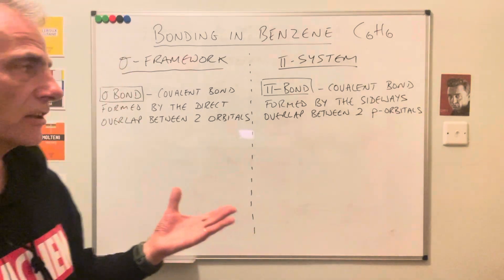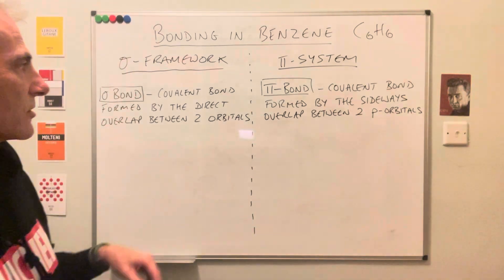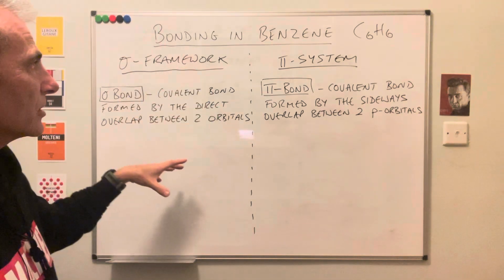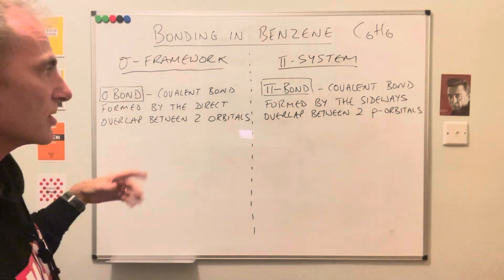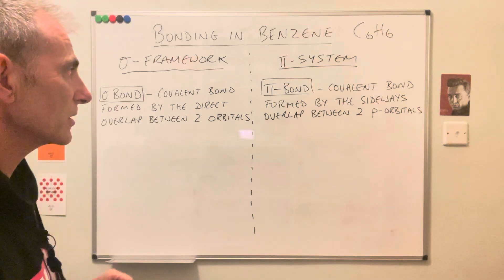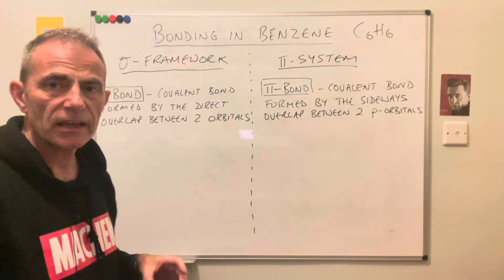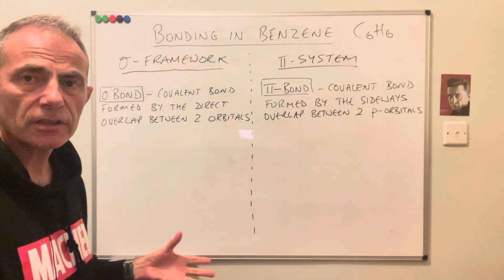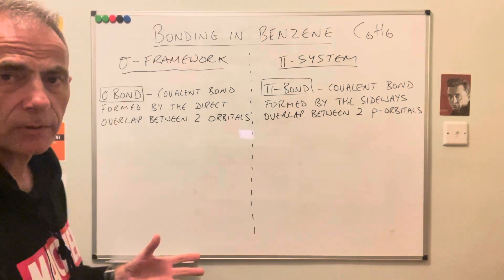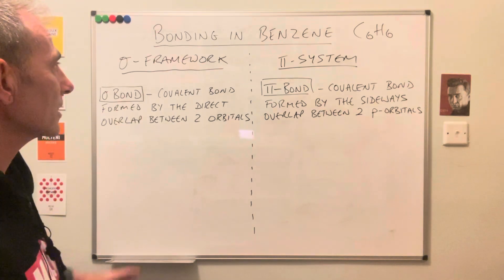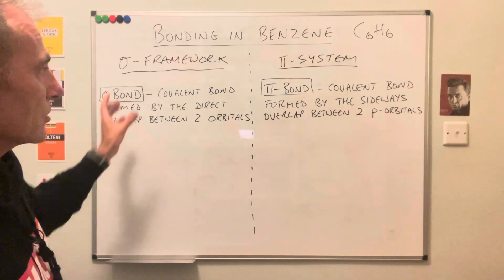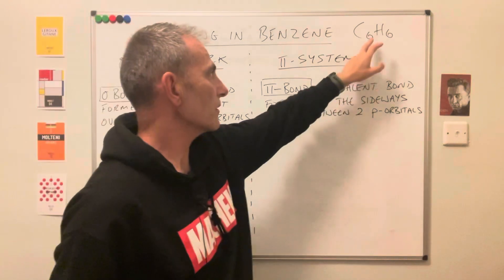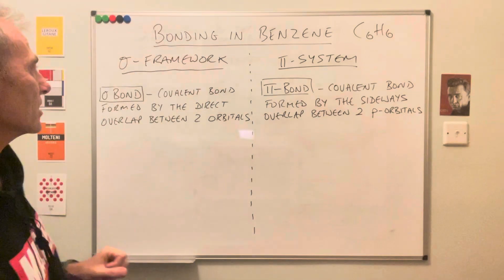Hi everyone, currently teaching aromatic chemistry with my year 13 students, so we've been talking about the bonding in benzene. I thought I'd make a quick video about it, hopefully explain it as simply as possible. We'll get across all the information you need to answer a question about the bonding in benzene. I'll just quickly go through what's already on the board. The formula of benzene is C6H6.